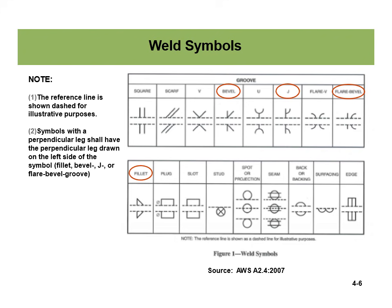On this slide you can see all the different kinds of weld symbols: bevels, square, scarf, J, flare V, flare bevel, fillet, plug, slot, stud — a whole slew of different types you can put on a welding symbol. The reference line is shown for illustrative purposes. Also note that the symbol with a perpendicular leg shall always have the perpendicular leg drawn on the left side of the symbol — this applies to fillet, bevel, J, or flare bevel groove welds. That's just how it's drawn; you can't draw it the other way around.